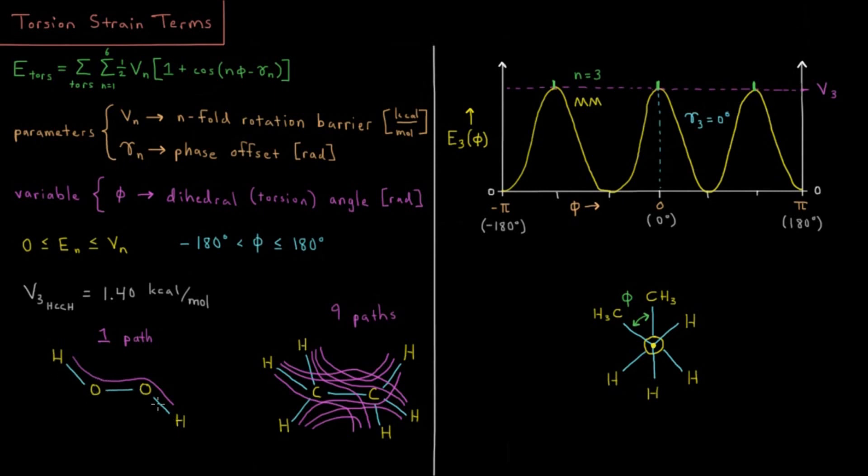We might have something here like hydrogen peroxide where we have an HOOH angle between plane HOO and OOH, which would be our torsion angle. If we look in this kind of Newman projection here that looks like a butane molecule, we could see an example of a torsion angle there between these two different planes.